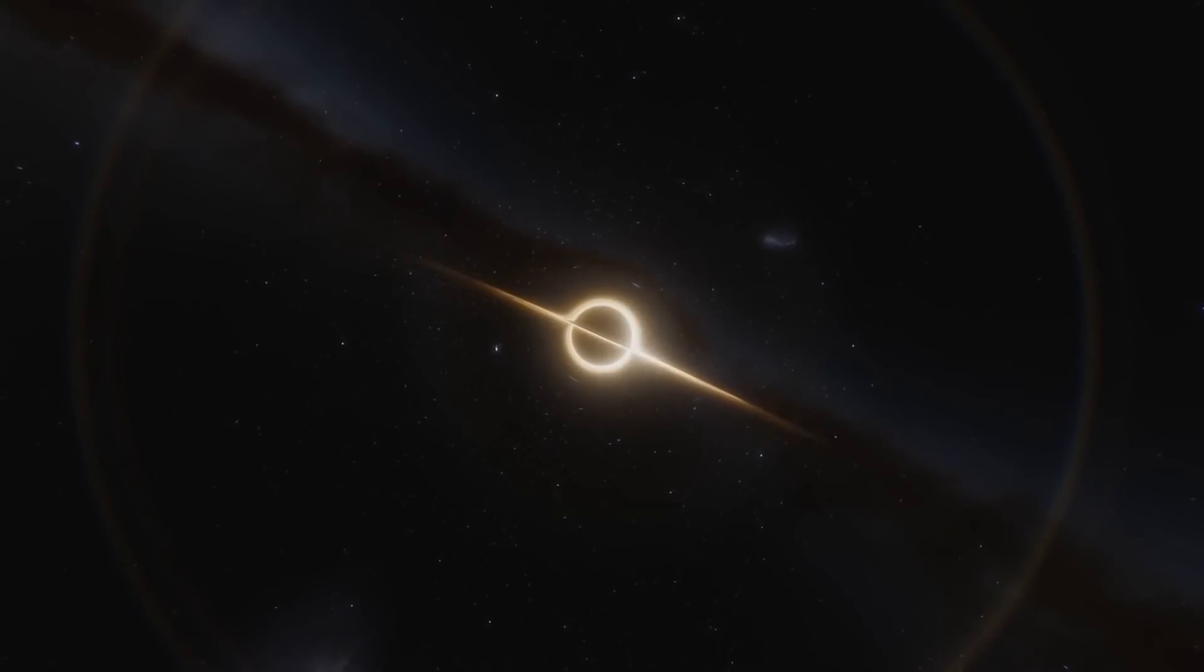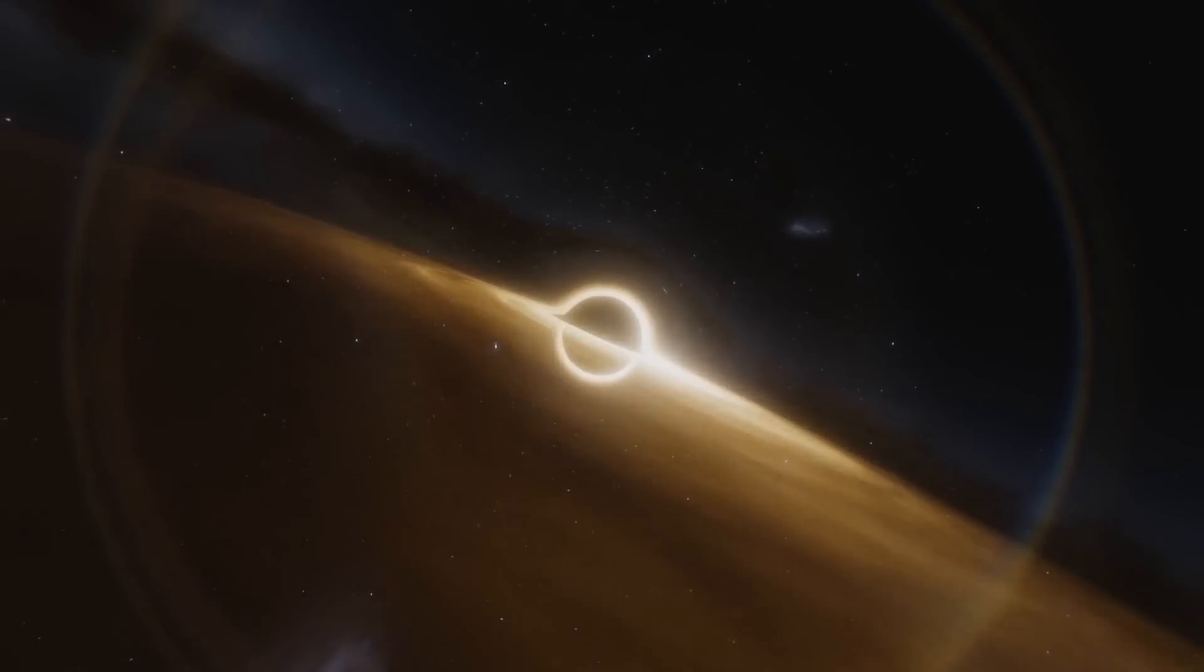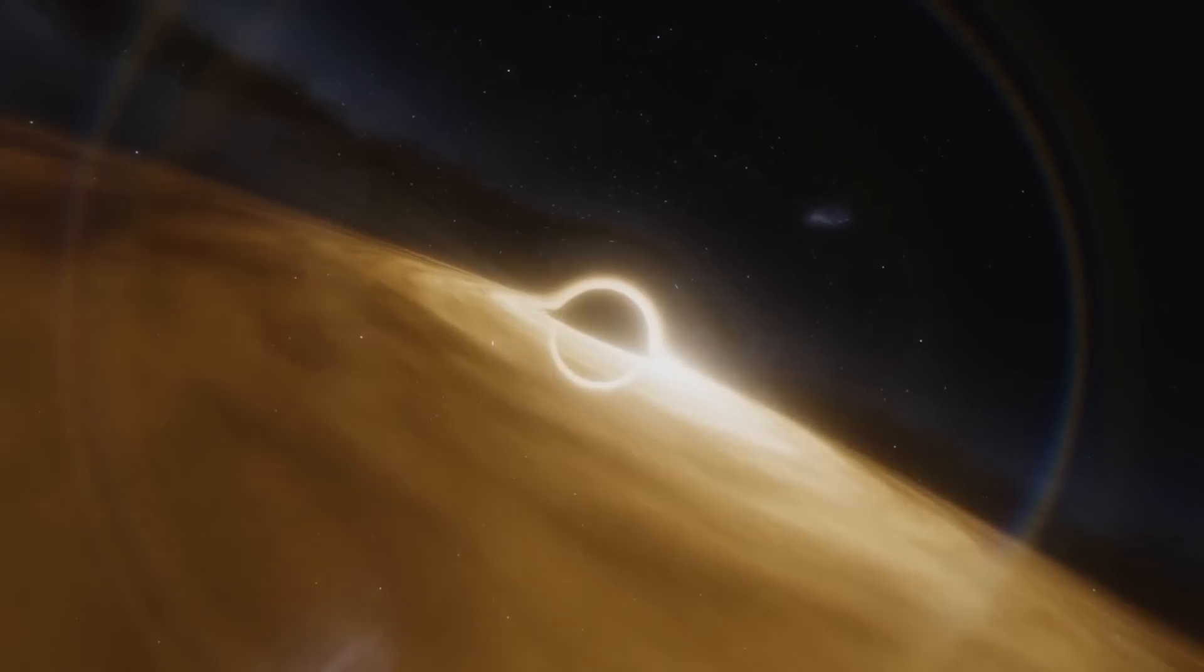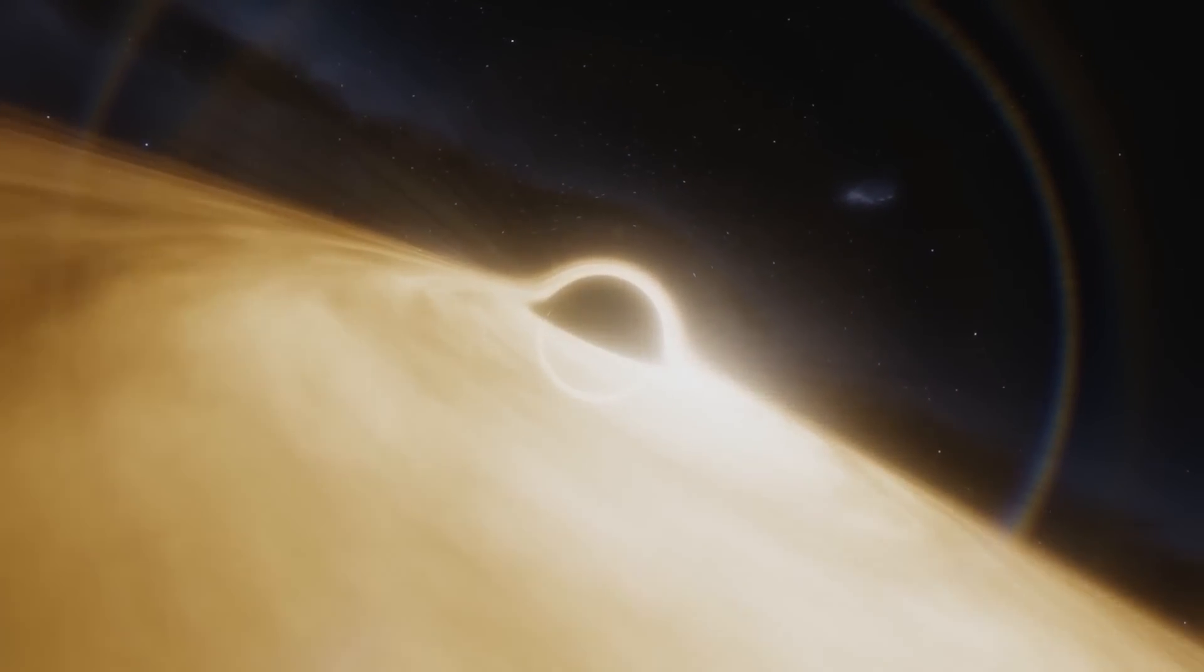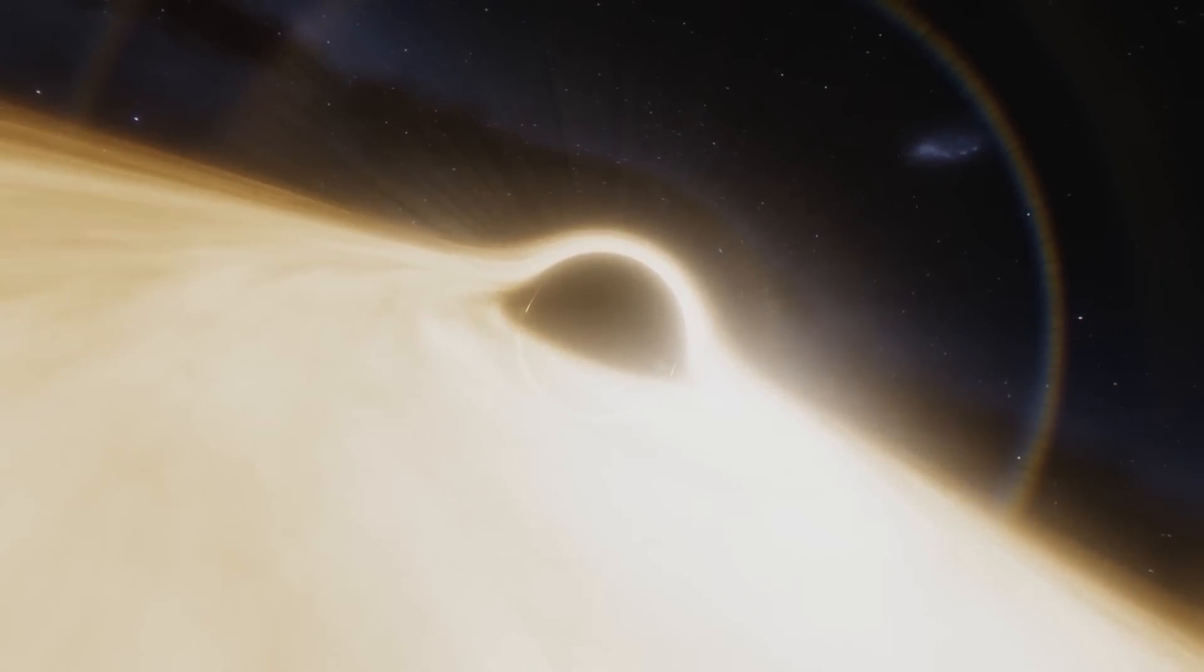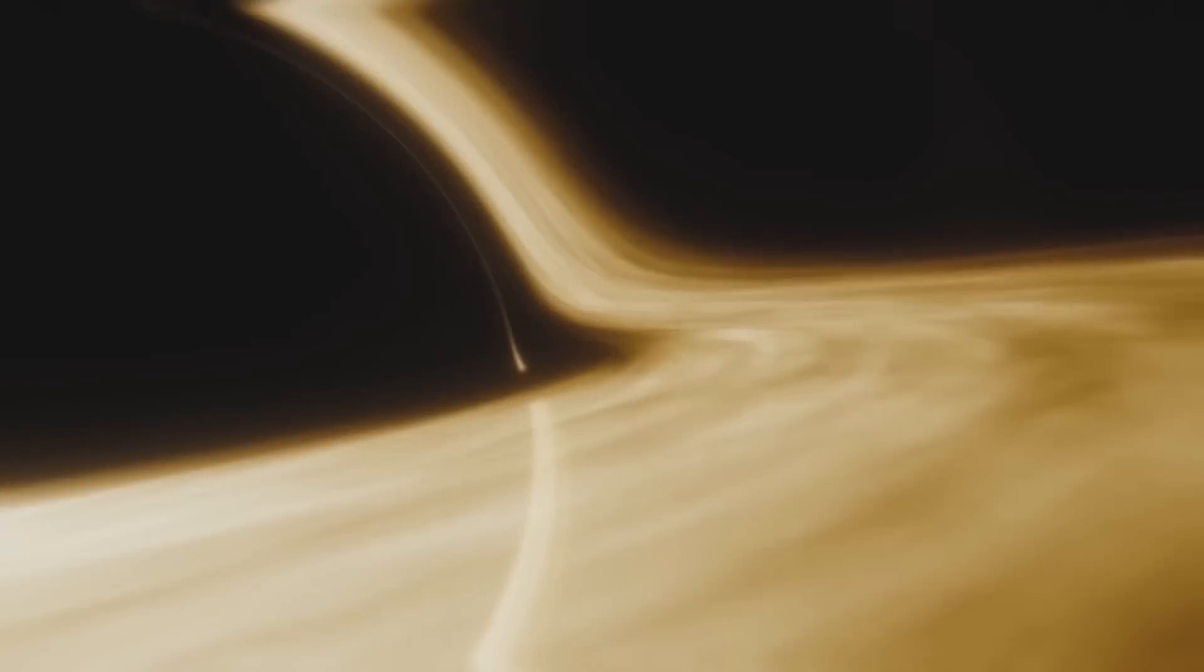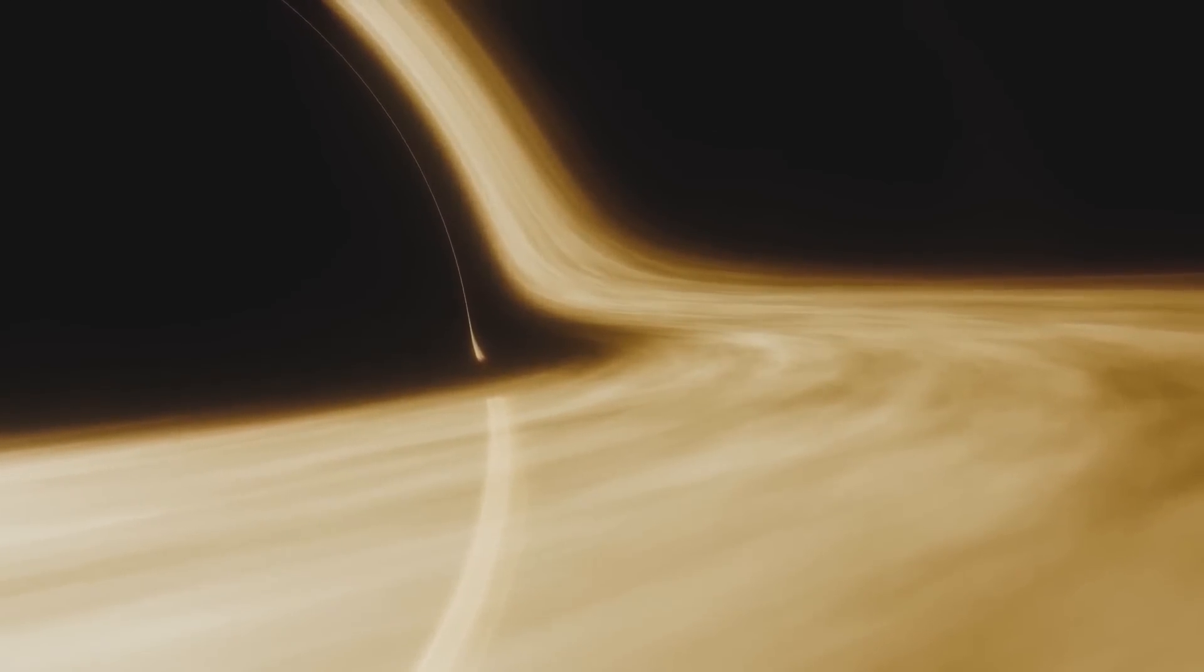What if the star has an initial mass greater than three solar masses? After the supernova explosion, its core does not become a neutron star, but collapses into a black hole, a celestial body with a gravitational field so immense that not even light can escape. A black hole to our eyes is invisible precisely because it does not emit light. From a relativistic point of view, a black hole is a region of spacetime with a very large curvature.